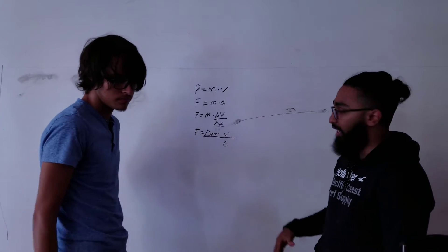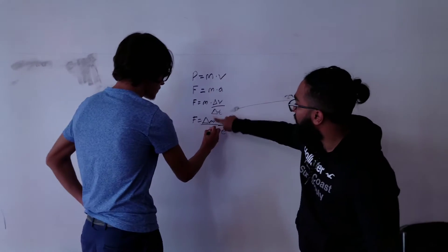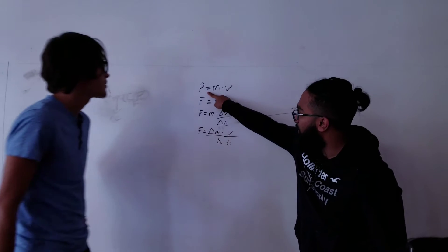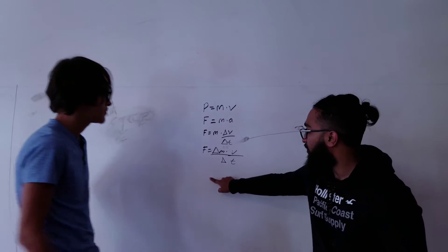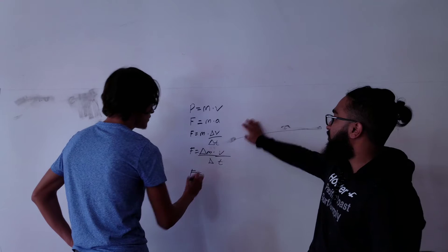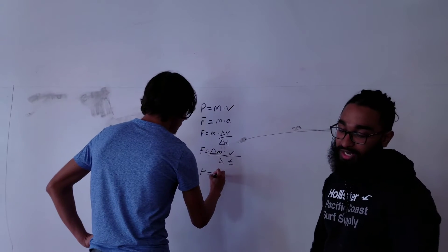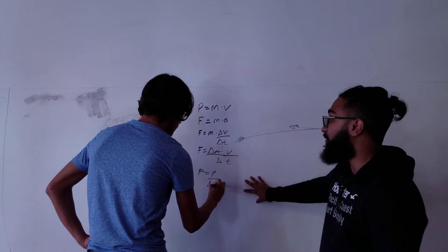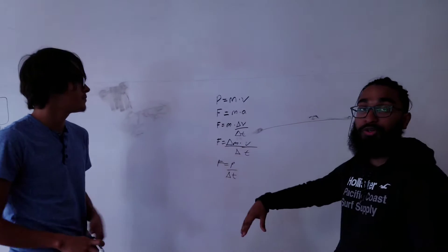And then basically, again, like we said, mass times velocity equals P. So you can rewrite force as P over the change in time. That's how we're going to get force, and we're going to use that in our example equation that we're about to solve.